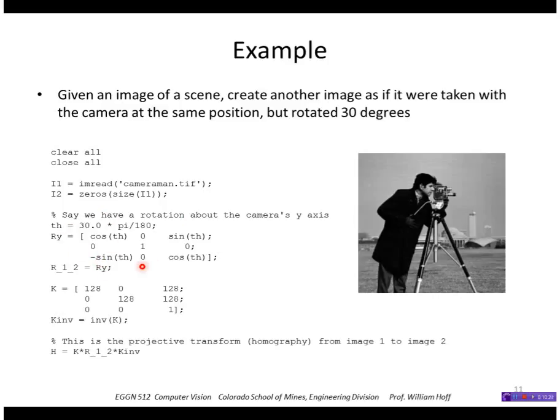And let's say this image had this intrinsic camera parameter matrix here. I'm assuming that the focal length is 128 and the image center is 128, 128, which is right in the middle of the image. So the projective transform, the homography would be equal to K times the rotation matrix times K inverse.